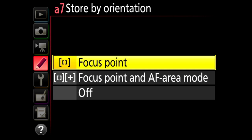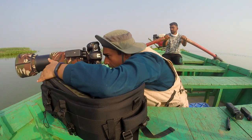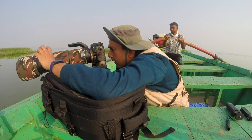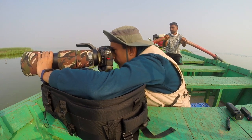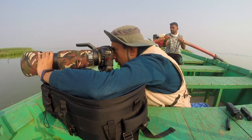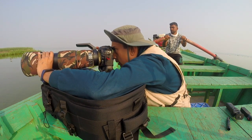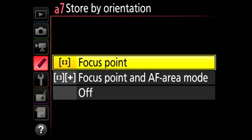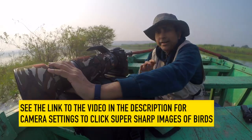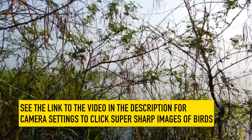Store by orientation: focus point. That means I can select a different focus point when holding the camera horizontally and a different one when it's vertical, so I don't have to readjust it when switching between orientations. We also have the option of focus point and AF area mode, but that's irrelevant when your AF area mode is set to single point. The activity over here has slowed down.